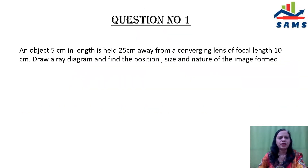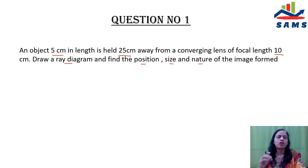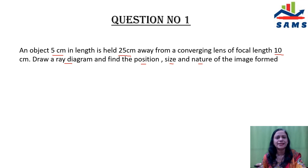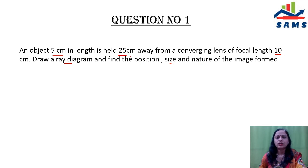The first question is on your screen. An object 5 cm in length is held 25 cm away from a converging lens of focal length 10 cm. You have to draw the ray diagram and find the position, size and nature of the image formed. This is the most common type of question from previous year Class 10 board exam papers — you can expect it as a 3 marks question.